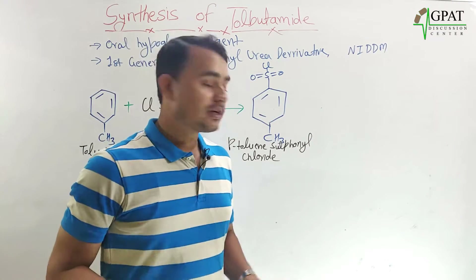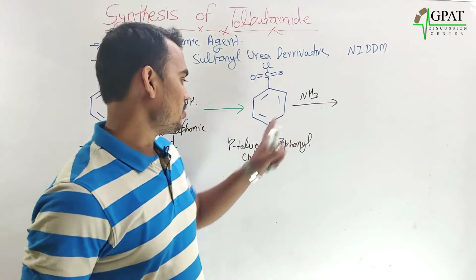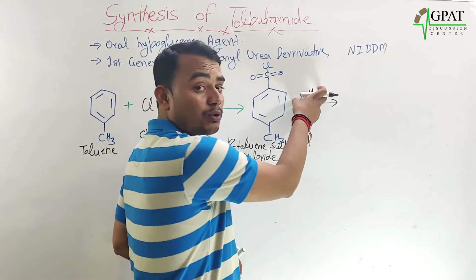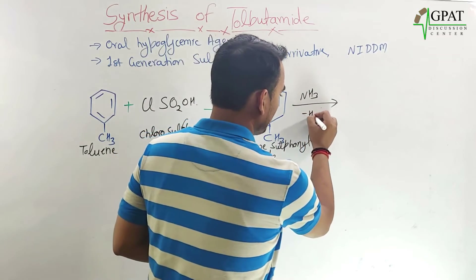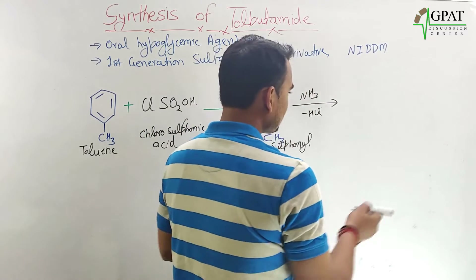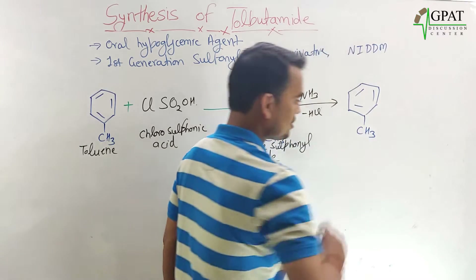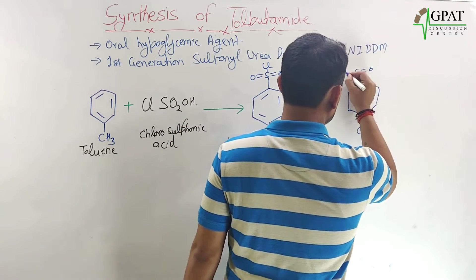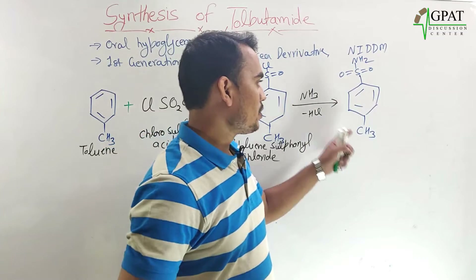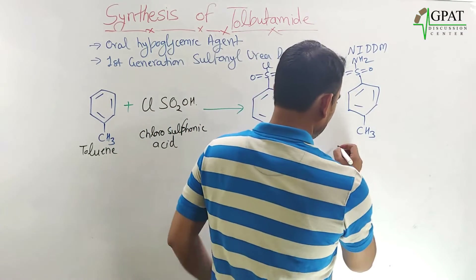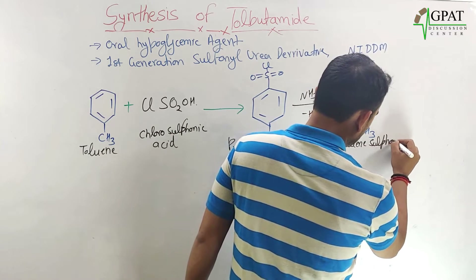Now, paratoluene sulfonyl chloride undergoes reaction with ammonia — ammonia gas is passed over this compound. The NH2 group displaces the chloride ion, and HCl is removed. The product obtained is paratoluene sulfonamide.